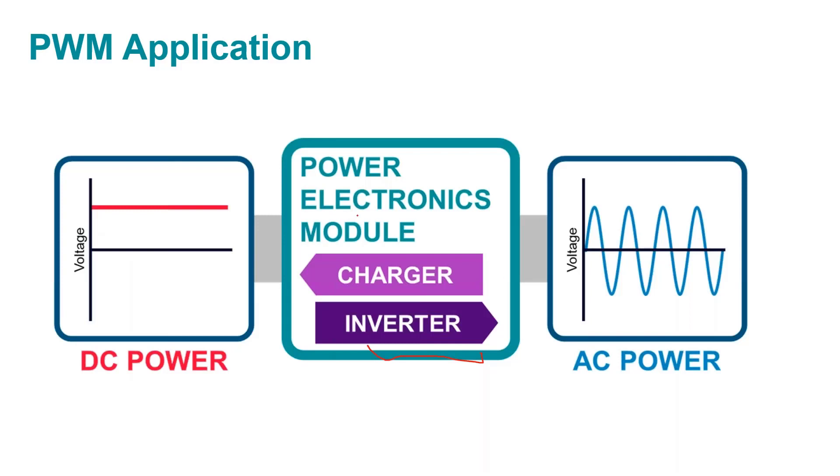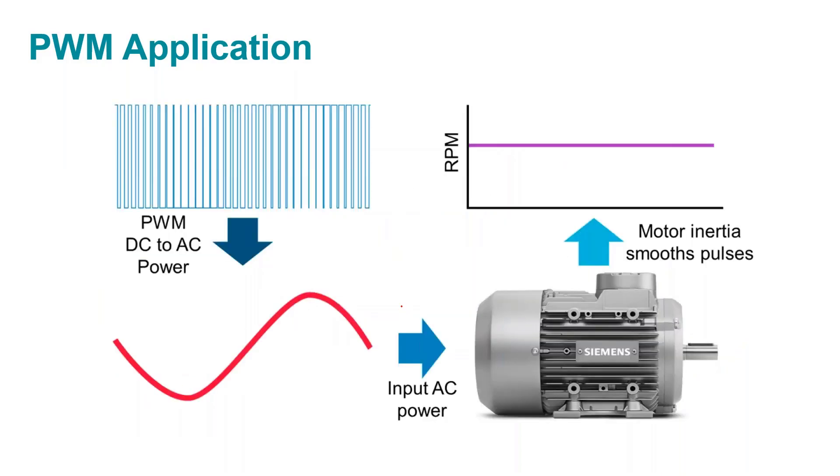So as we mentioned, these things get used a lot in these power electronic modules, right? Converting DC to AC or vice versa, depending on how it's configured. And you know, some interesting things happen.